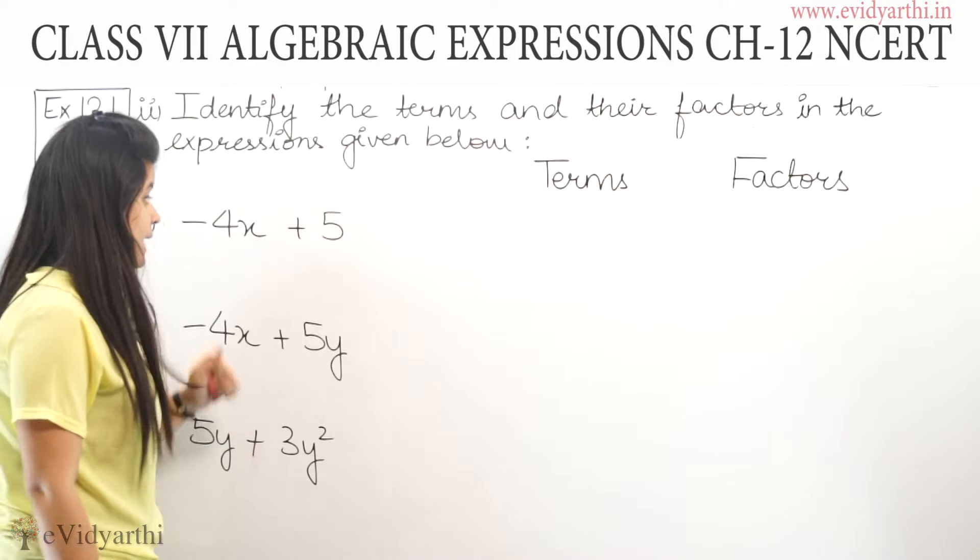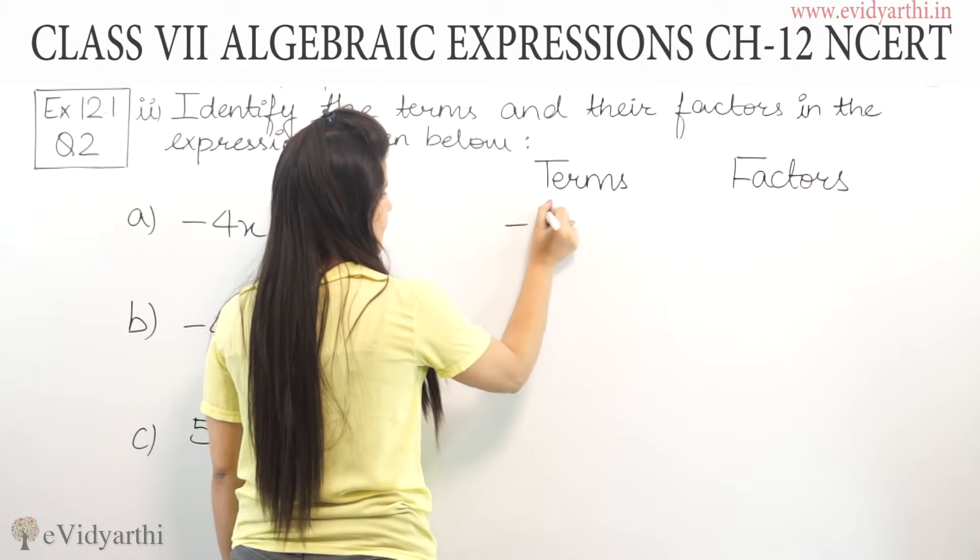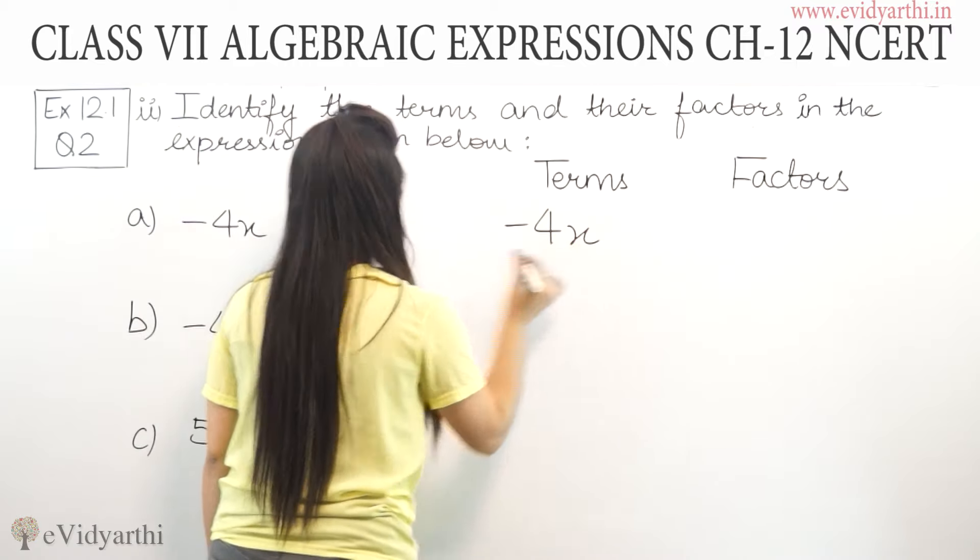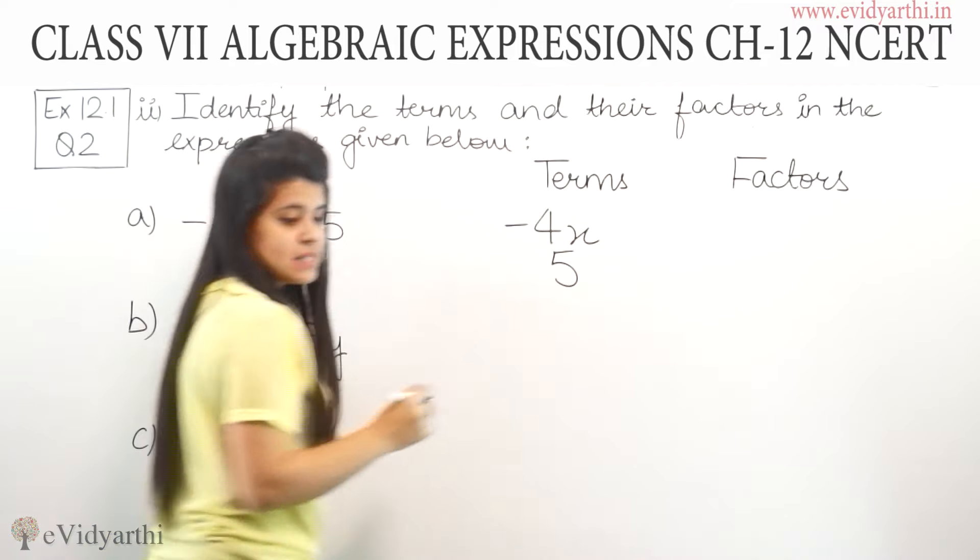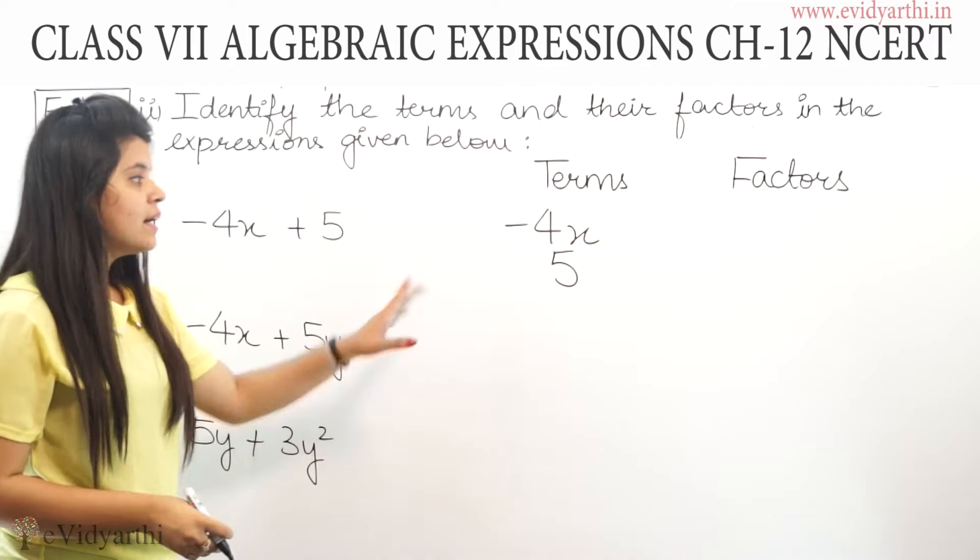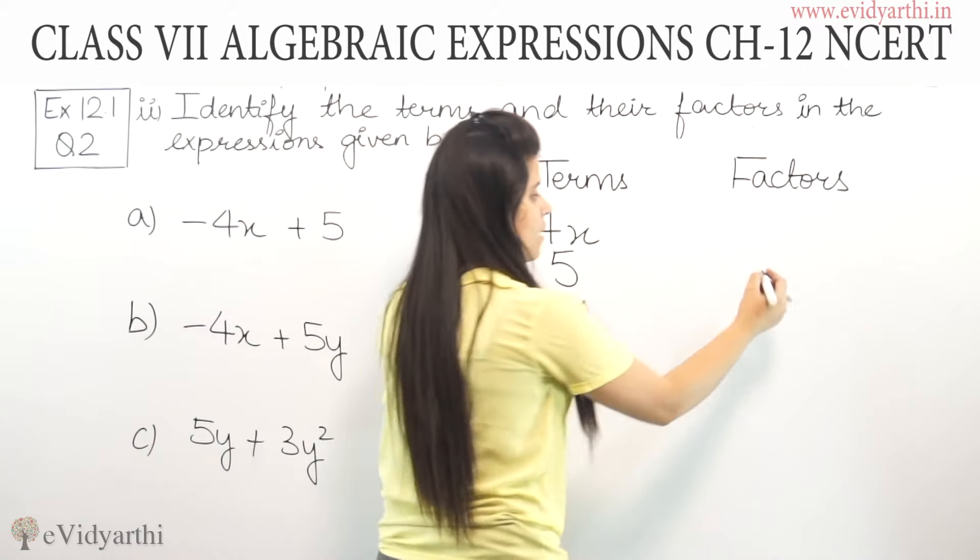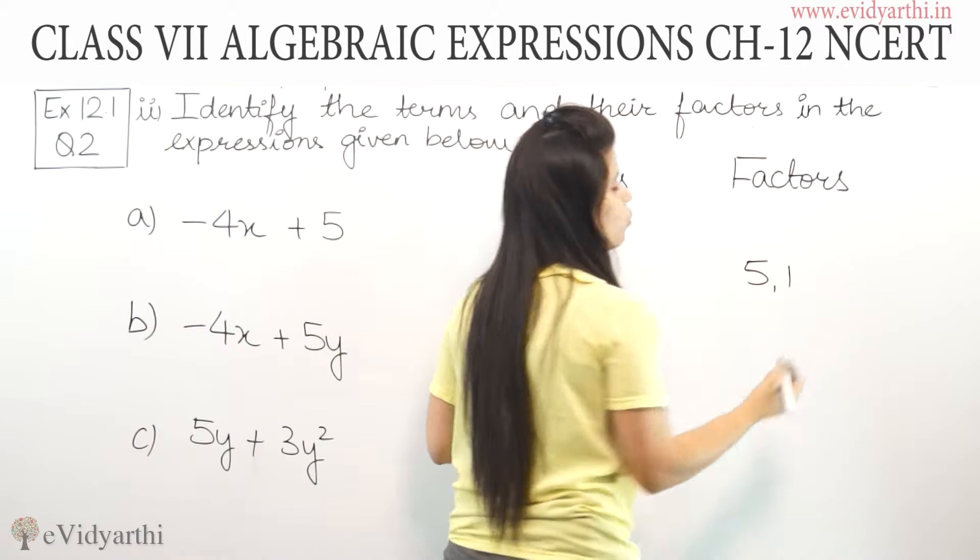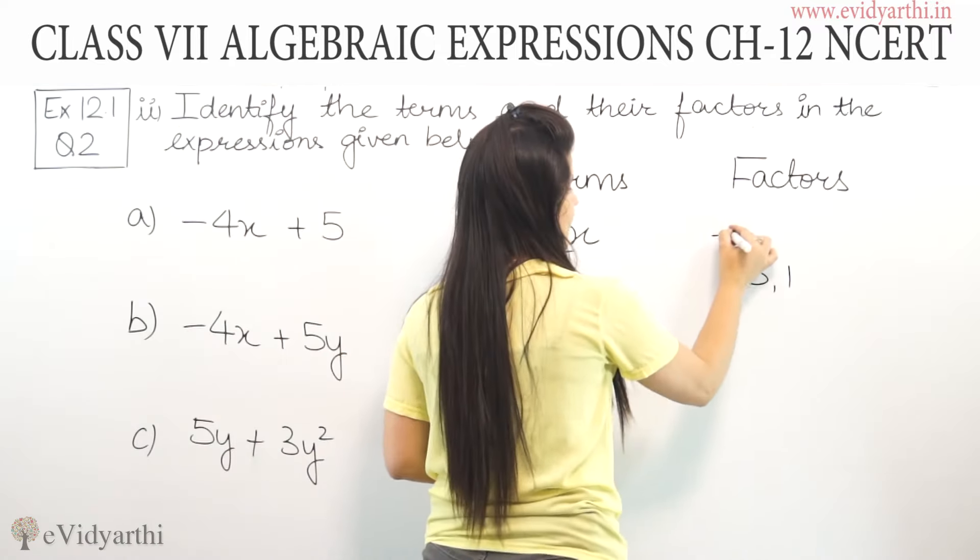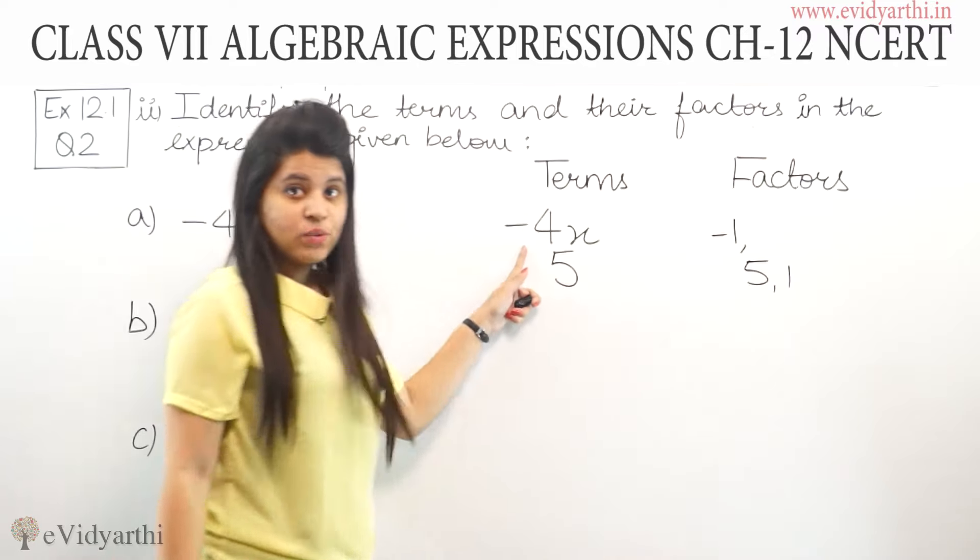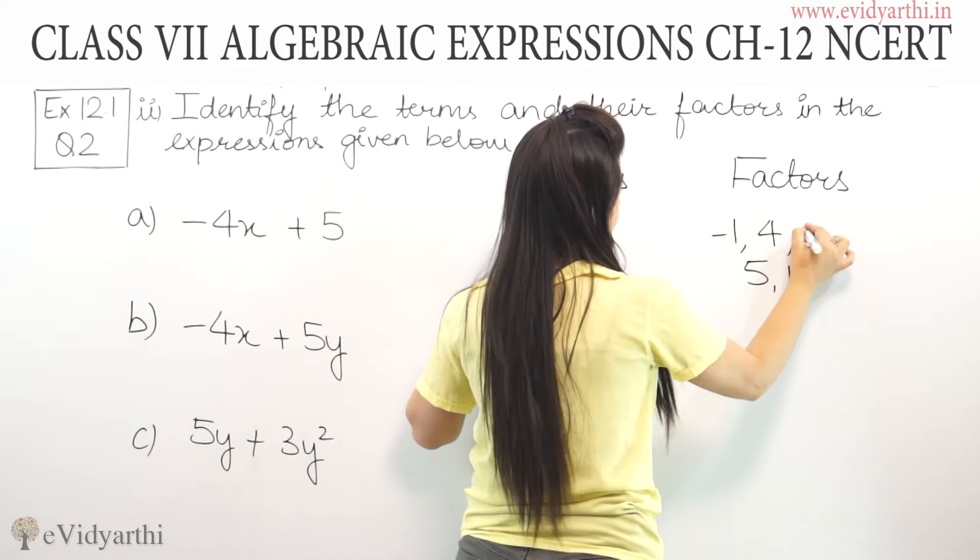First part is -4x + 5. First, let us write the terms: -4x and 5. So, two terms are -4x and 5. Now, if we write factors, 5 is just 5, or we can say 5 × 1. For -4x, the factors are -1 (because it's negative), then 4, and then x.